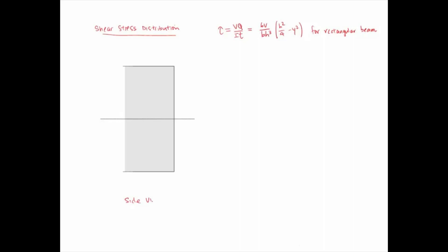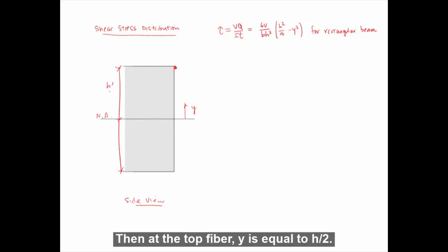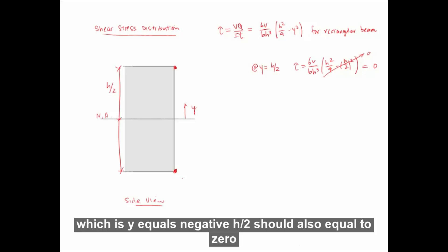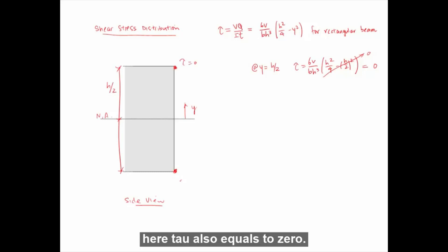This is the side view of our beam. At the top fiber, which is right here, we measure Y from the neutral axis. Then at the top fiber, Y is equal to H over 2. Substituting Y equals H over 2 into our equation for τ, this term inside the bracket goes to 0, so our shear stress is actually 0. And due to symmetry, shear stress at the bottom fiber, which is at Y equals negative H over 2, should also equal to 0. So here τ equals 0, here τ also equals 0.